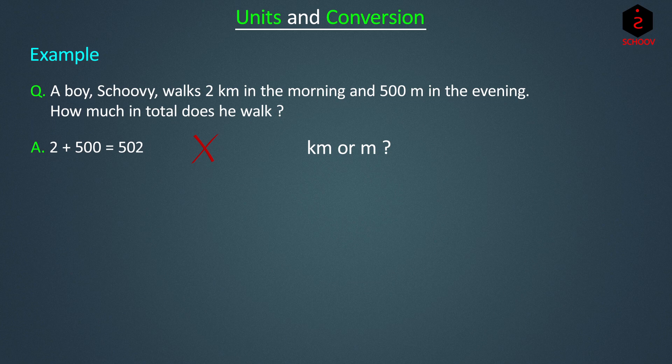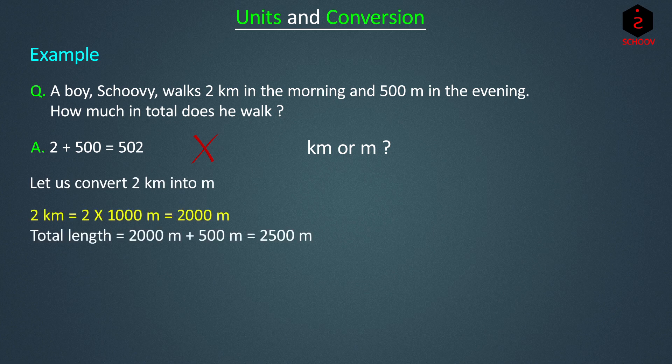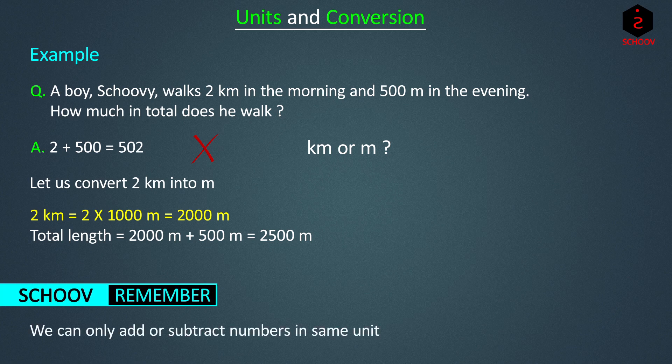We should convert both lengths into the same unit. We can convert 500 metres into kilometres, but that involves decimals which we will study later. Hence, let us convert 2 kilometres into metres. 2 km equals 2 into 1000 metres, that is 2000 metres. Total length equals 2000 metres plus 500 metres, that is 2500 metres. Remember, we can only add or subtract numbers in the same unit.